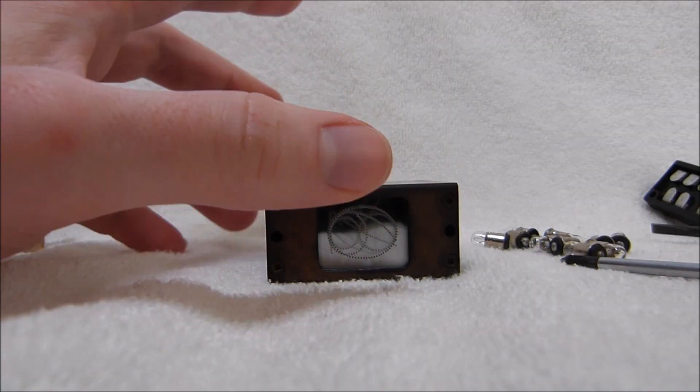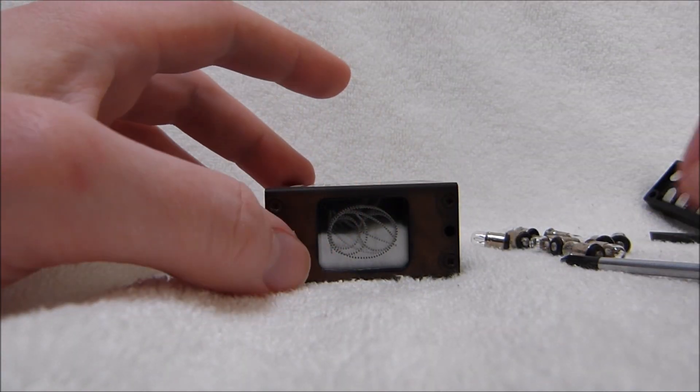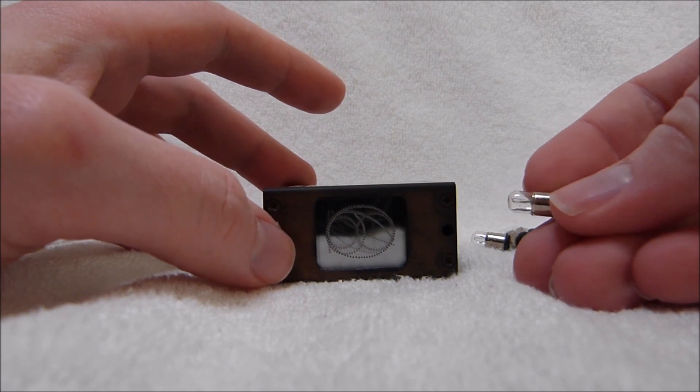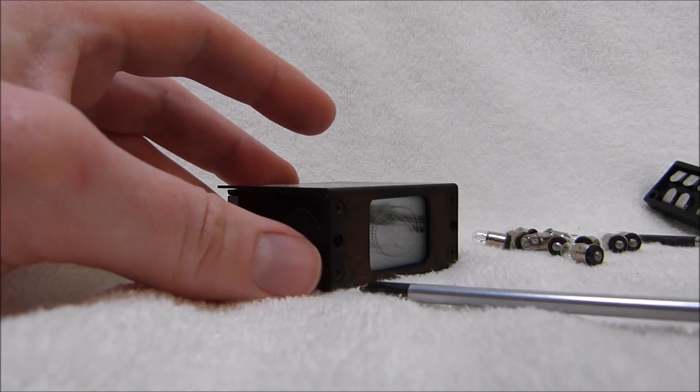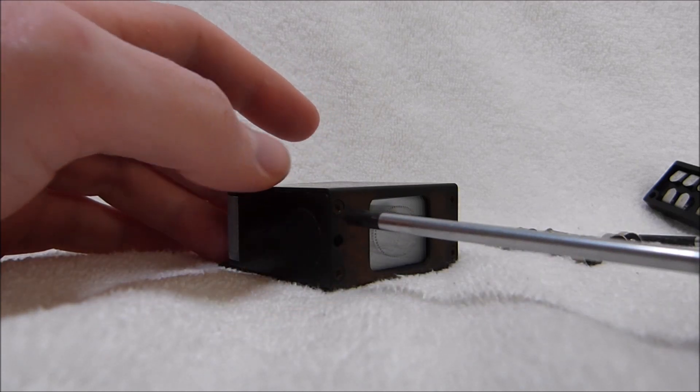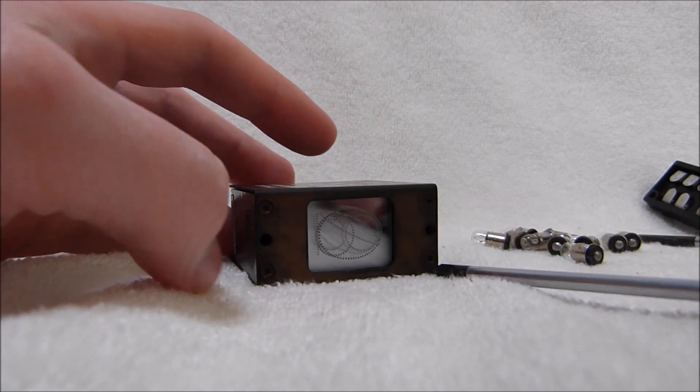You don't normally need to take these displays apart any further. You just need to remove that back piece to get at the bulbs. But I want to show you guys how these things are built so I'm going to take it apart a little bit further. And to do so you just got to remove these four screws here.